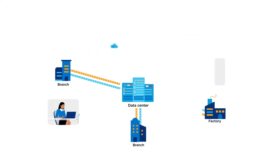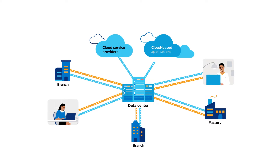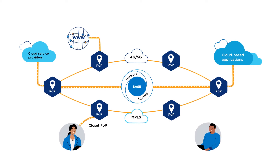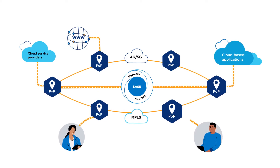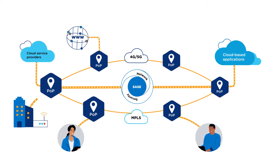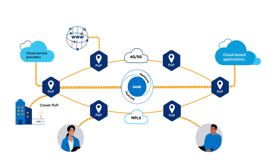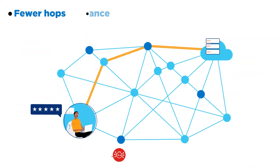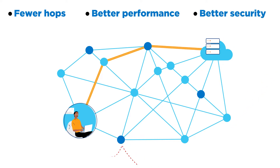Legacy networks were built for applications and data that never left the data center. SASE is deployed as a location-agnostic architecture, so you can easily shift PoP exchanges closer to traffic sources and destinations, reducing hops for lower latency, greater performance, and reduced network exposure to threats.